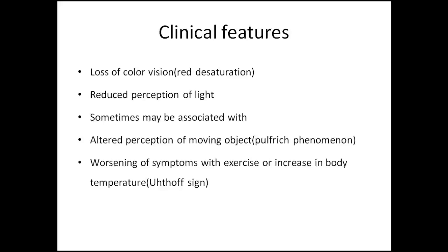To test for color vision, you can use a red colored object in front of the patient. When the patient sees the object with a normal eye, they see red, but when the normal eye is closed and the patient uses the diseased eye, they see decreased or faded red color — that is red desaturation. There could also be reduced perception of light.